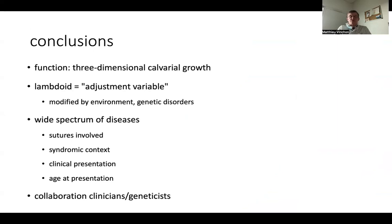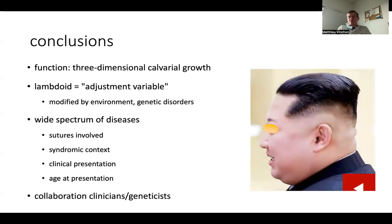In conclusion, the lambdoid suture has a function for the three-dimensional growth of the calvaria. It can be seen as an adjustment variable following the growth of the brain, but also external compression from the environment, and it is very sensitive to a large number of genetic disorders. It is associated with a spectrum of diseases according to the number of sutures involved, syndromic context, clinical presentation, and age at presentation, so it requires close collaboration between clinicians and geneticists.